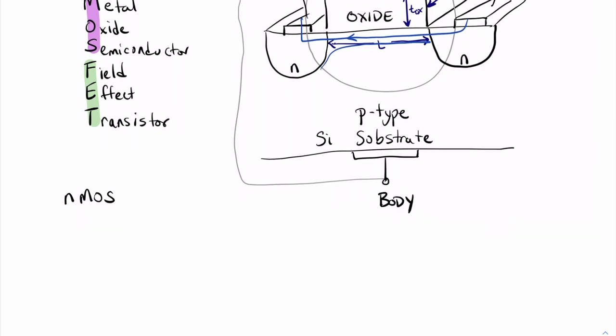The circuit symbol for an nMOS is with the arrow pointing out, much like the NPN of a BJT. So it looks like this, where this is the gate connection, this would be our drain here, this would be our source. And of course, we can't forget about the body. So if we do want to draw the body, it's often drawn in the middle there, and that would be our body connection.